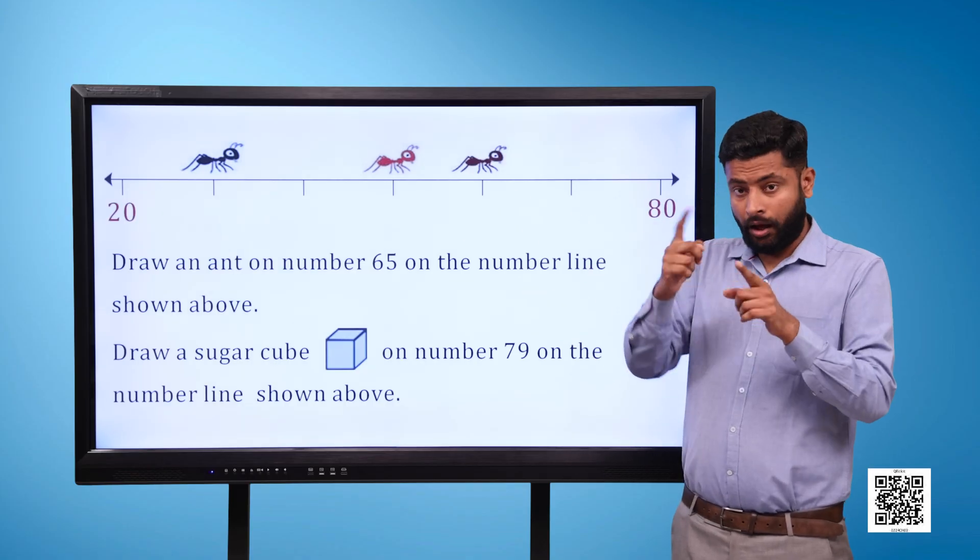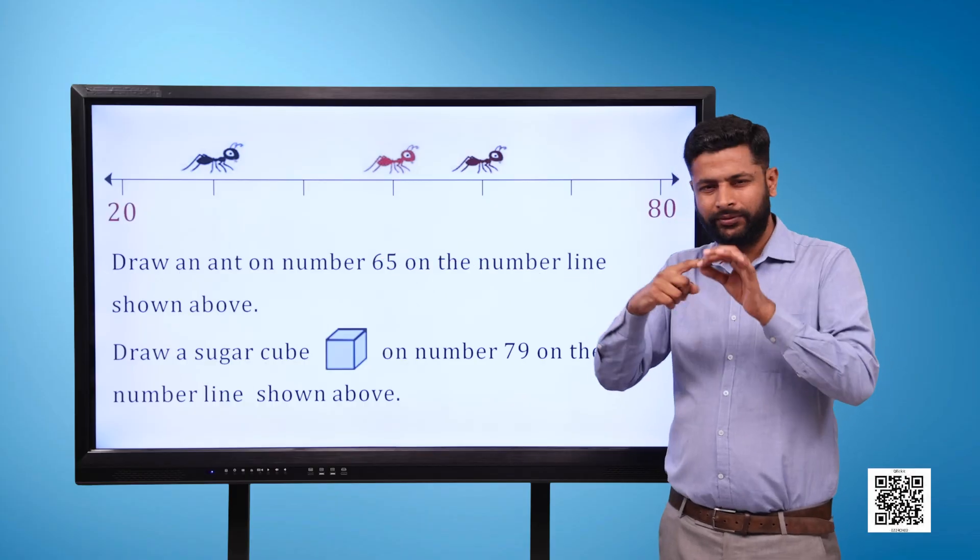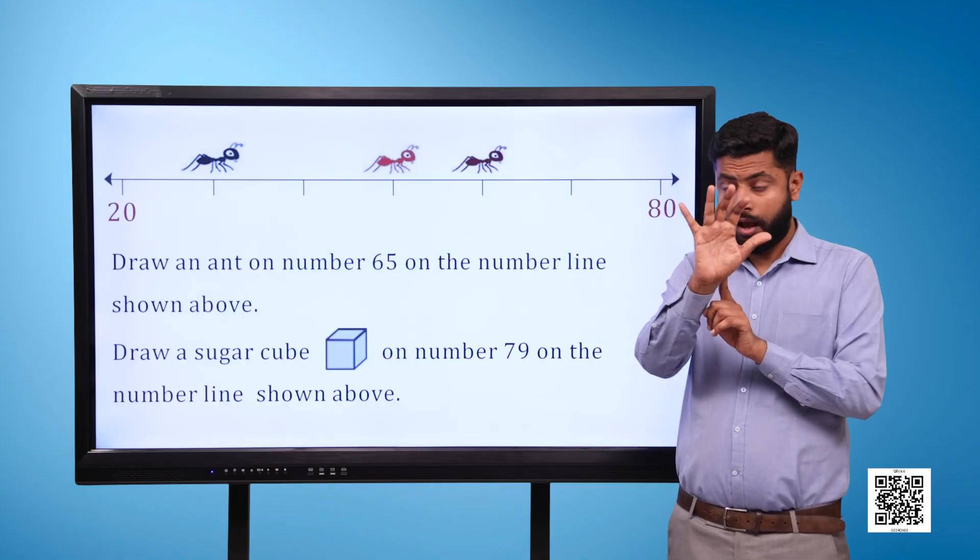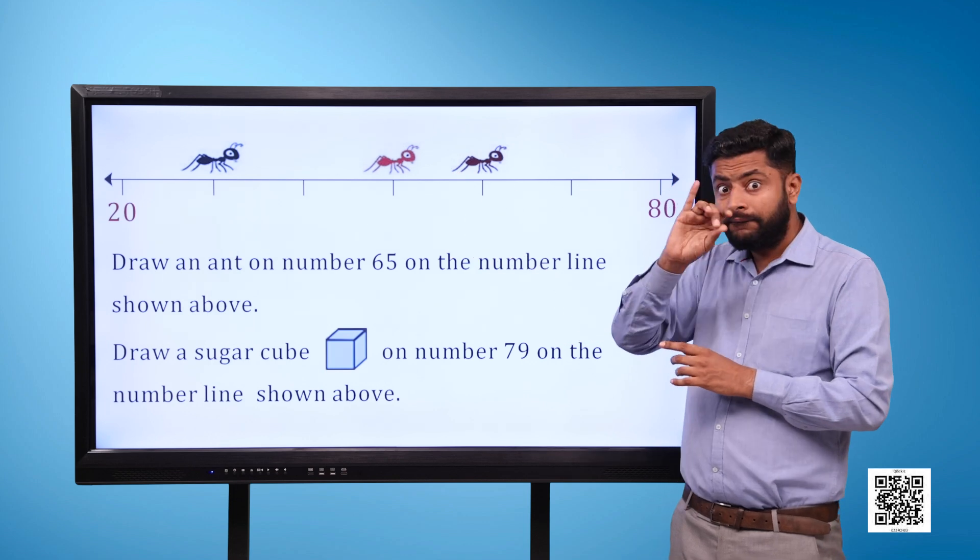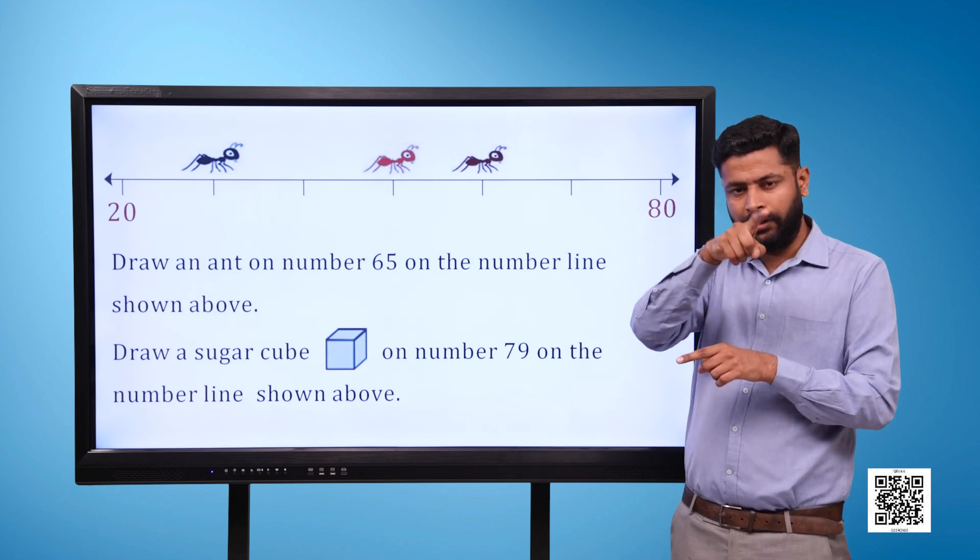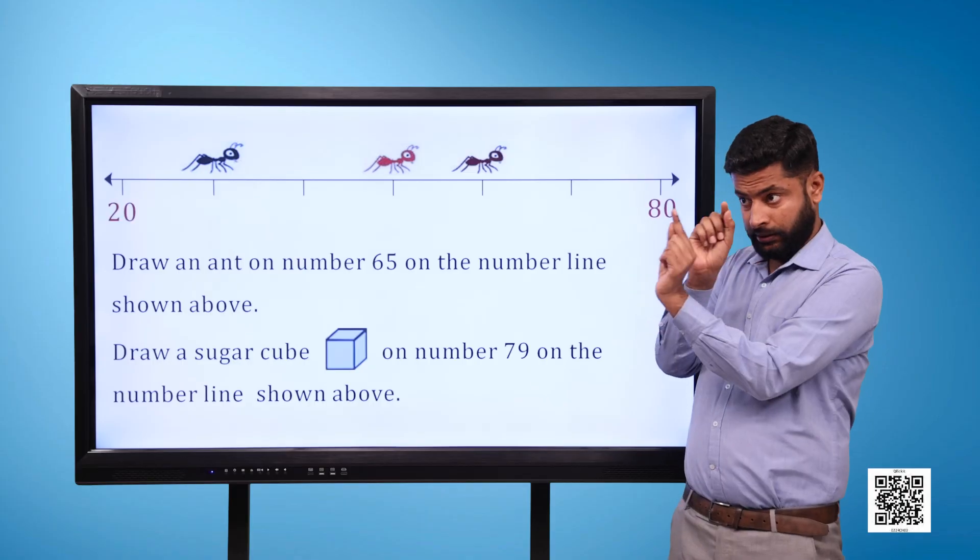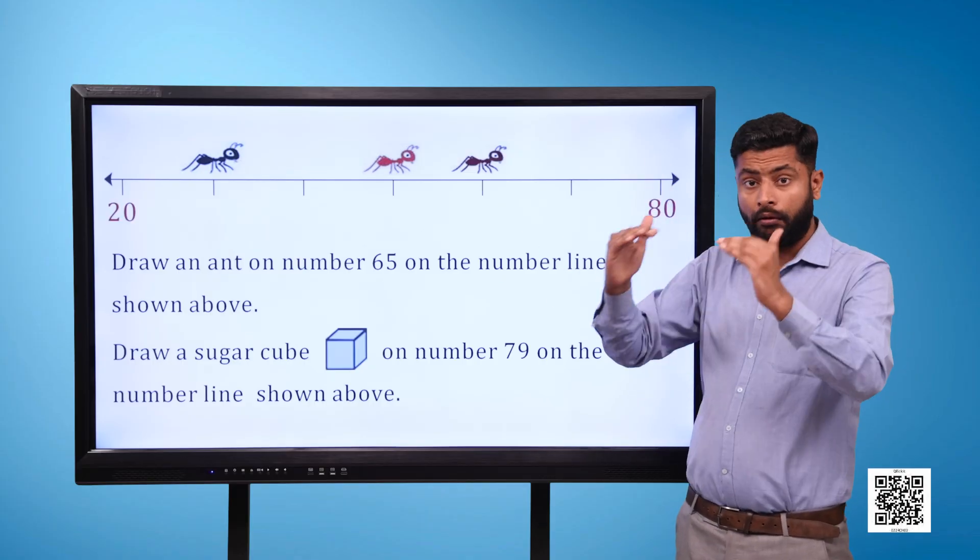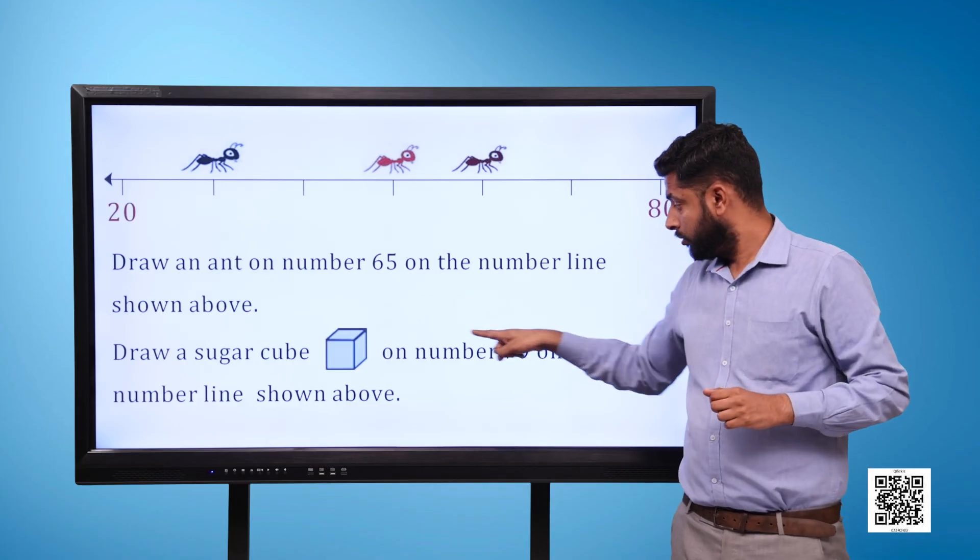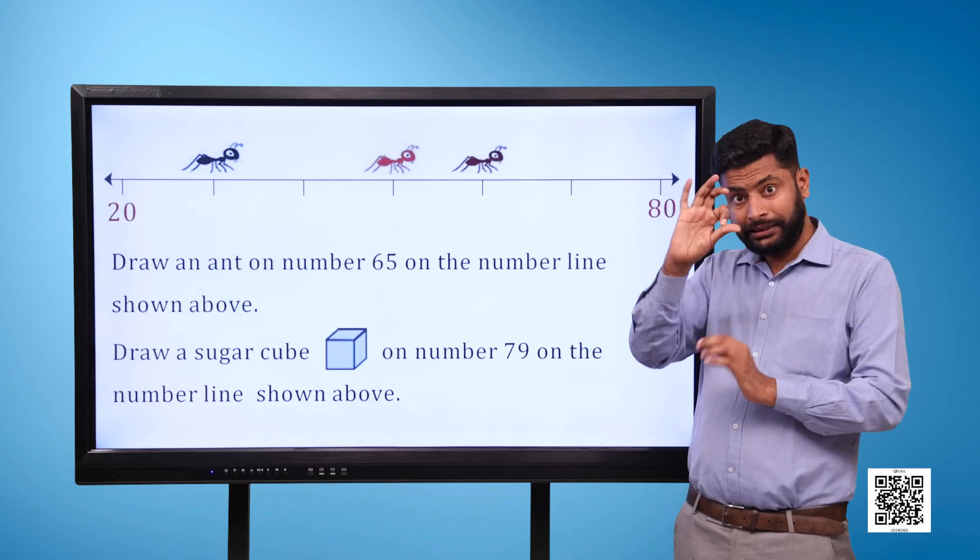Draw an ant on number 65 on the number line shown. Draw a sugar cube on number 79 on the number line shown.